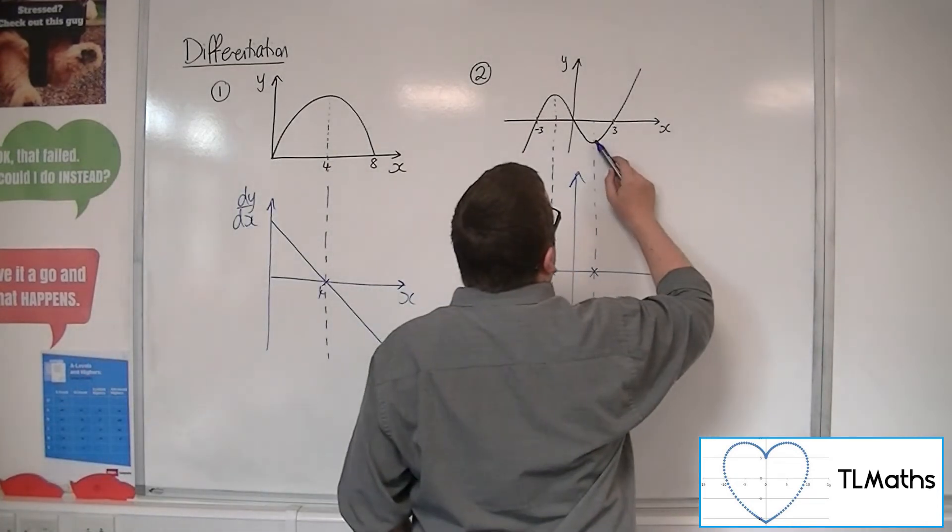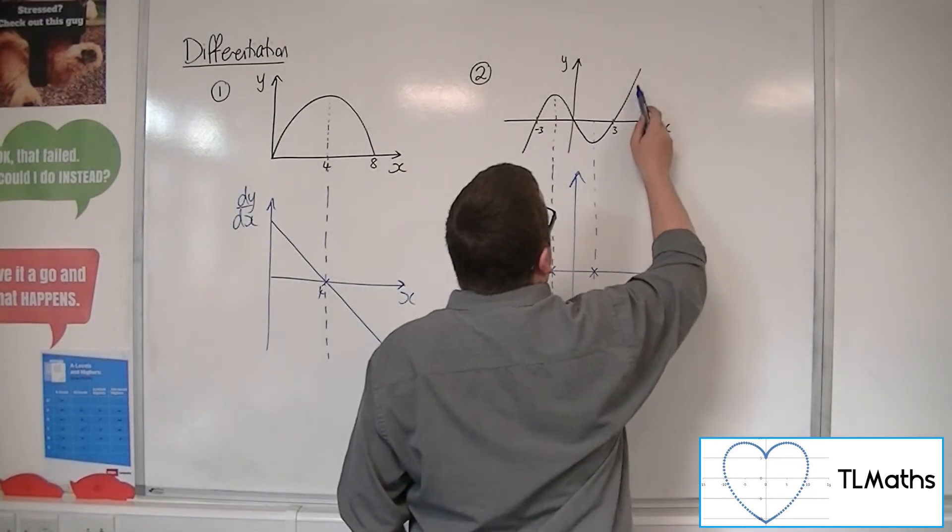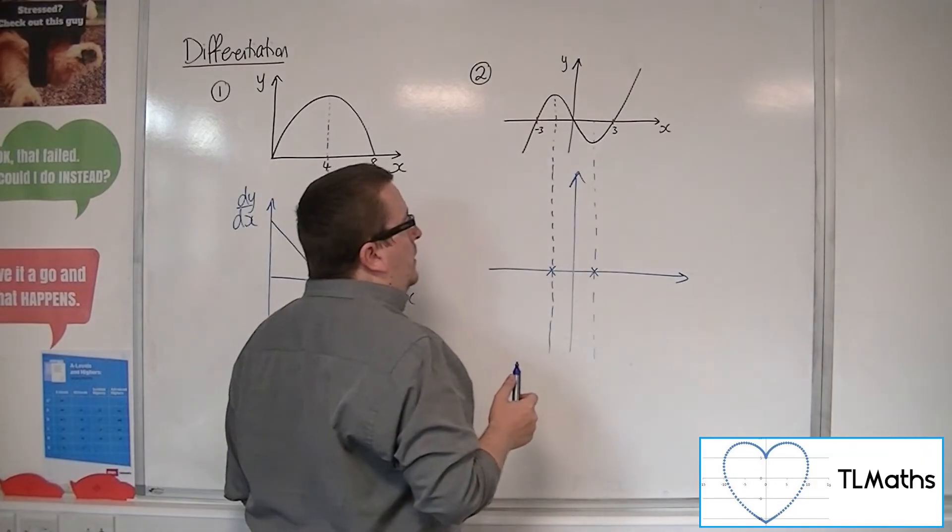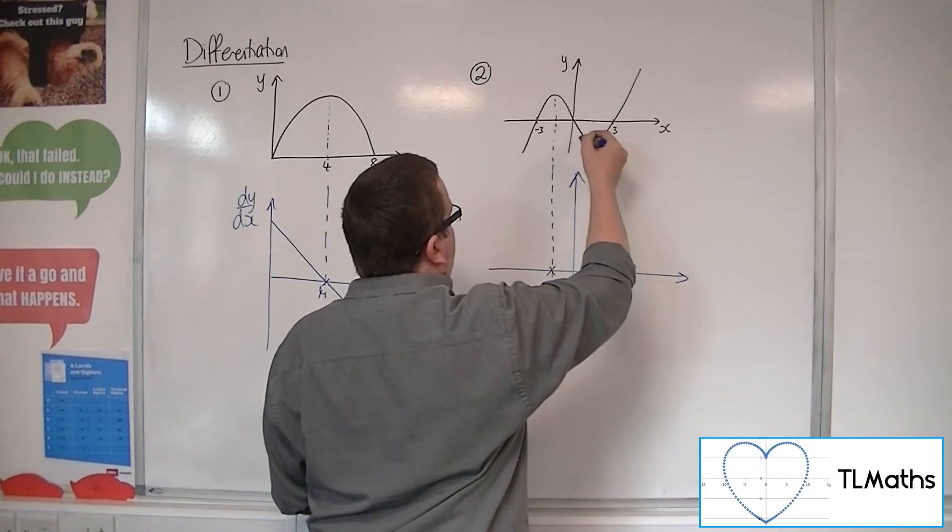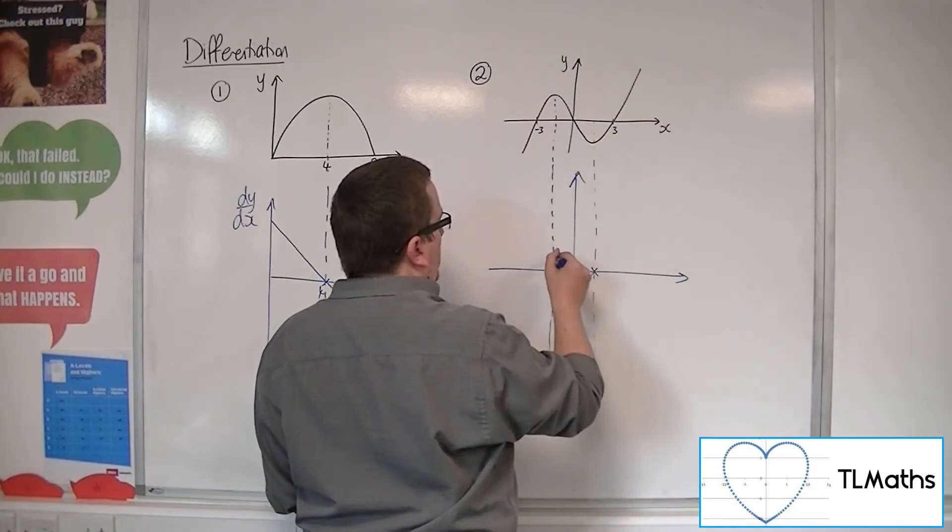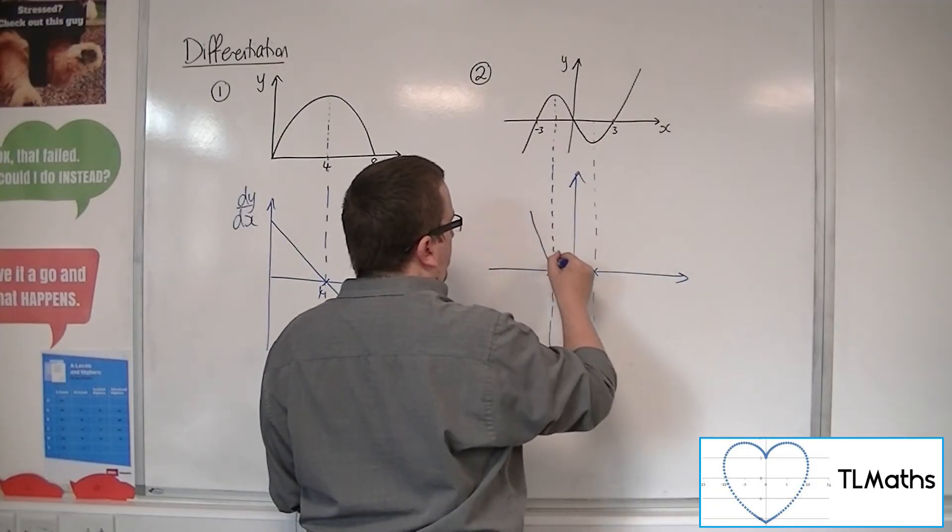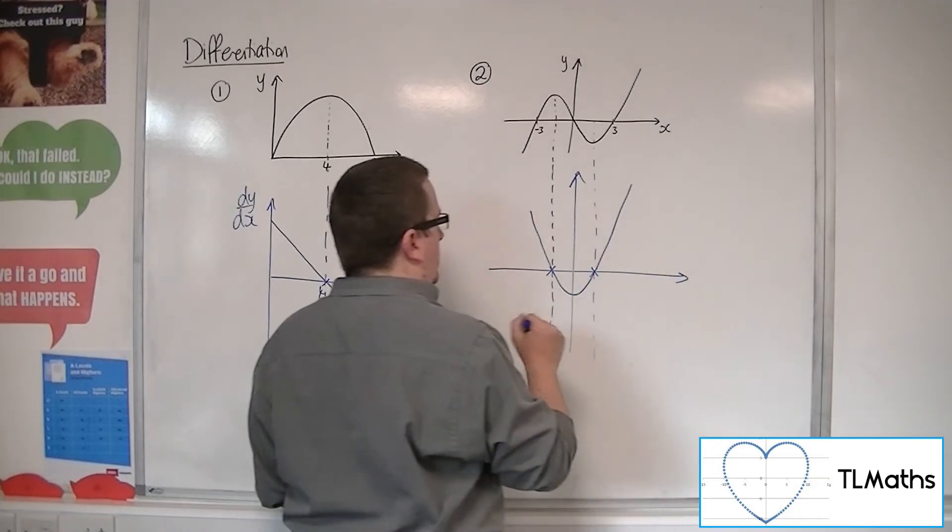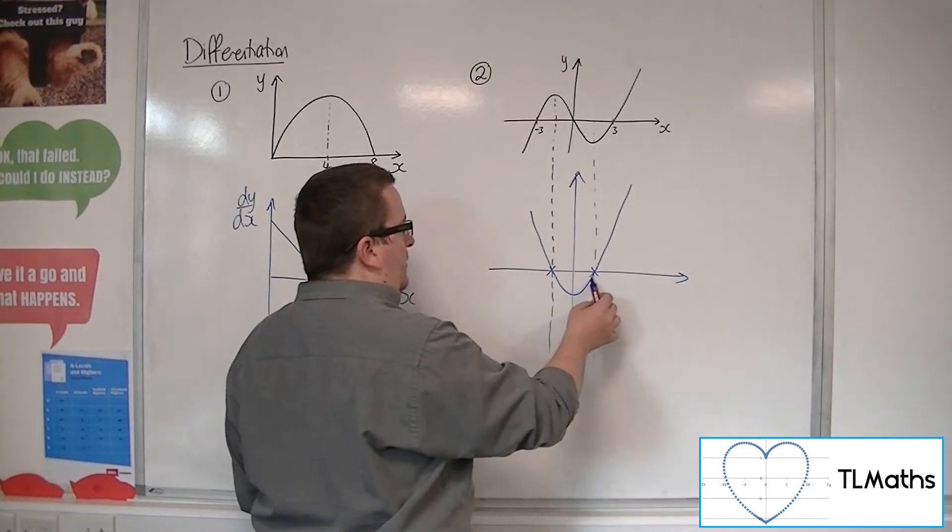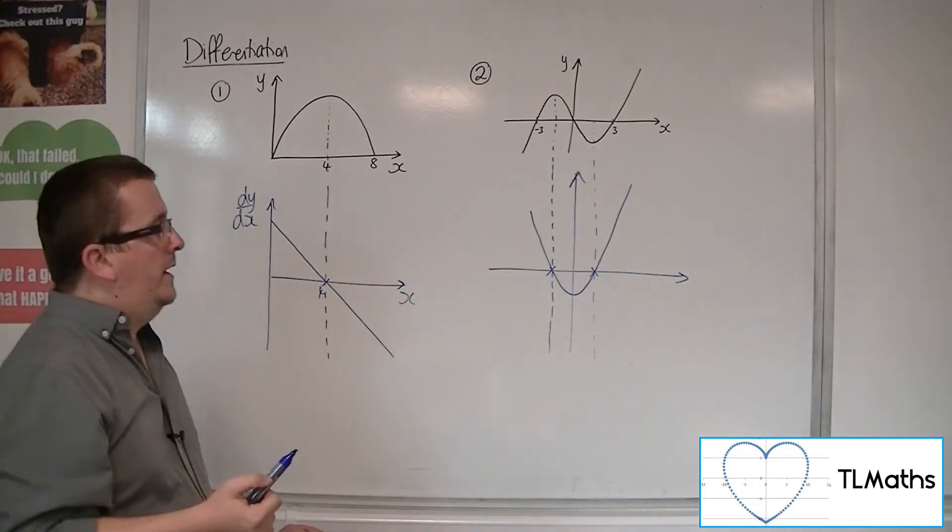And then we get past that point, and we're back to being positive. So we are positive, negative, positive. So positive, negative, positive, like so.